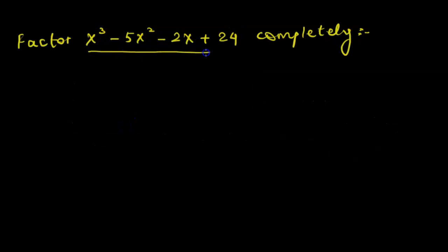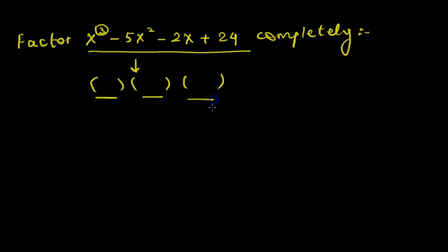The question wants us to factor this polynomial x³ − 5x² − 2x + 24 completely. As a reminder, factored form means bracket form. If the degree is 3, we will get three factors; if the degree is 2 we get two factors; and if the degree is 4 we get four factors. Now let's look at the steps to factor a given polynomial completely.